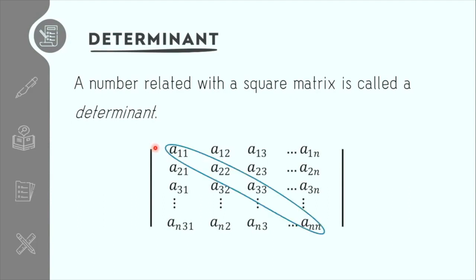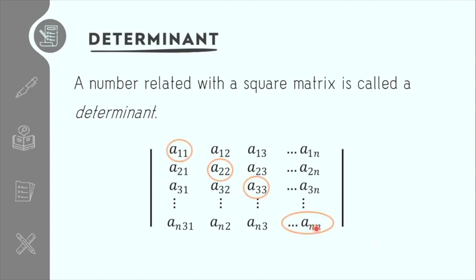As we can see, the diagonal here is called the leading or principal diagonal. And the elements involved in the principal diagonal are called the leading terms. To further understand it, let's have an example.